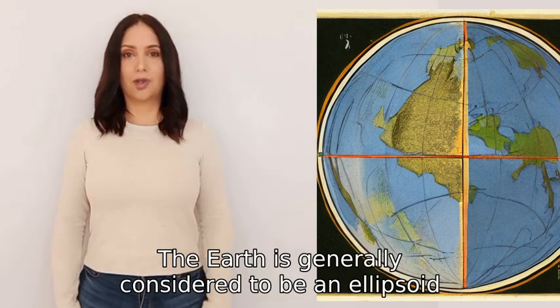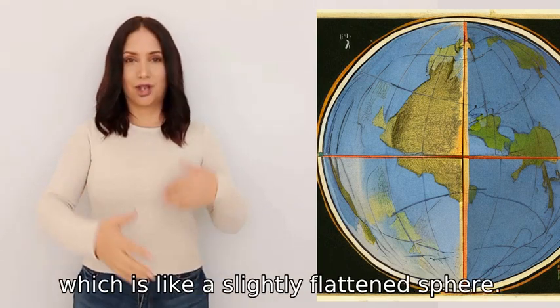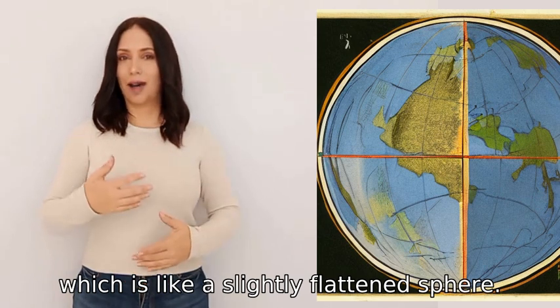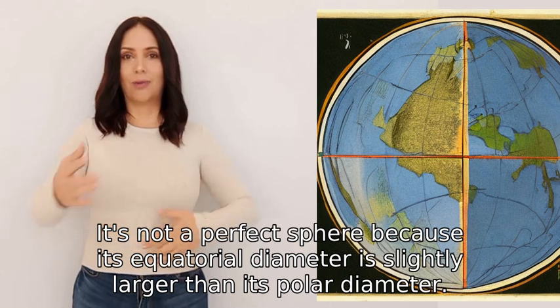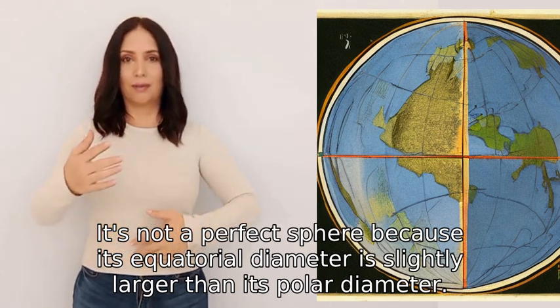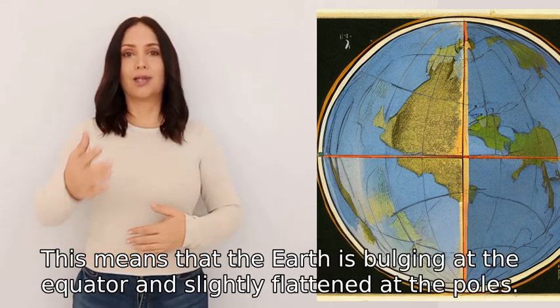The Earth is generally considered to be an ellipsoid, which is like a slightly flattened sphere. It's not a perfect sphere because its equatorial diameter is slightly larger than its polar diameter. This means that the Earth is bulging at the equator.